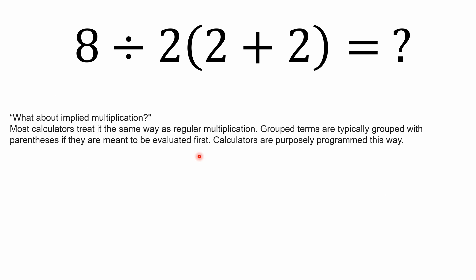And what about implied multiplication? What about implicit multiplication? Most calculators treat it the same way as regular multiplication. Most scientific calculators that are out there, any kind of group terms that you have, they're typically grouped with parentheses. Some scientific calculators actually will, if I Google, if I type a problem into Google that doesn't have parentheses, often Google automatically puts them in there, which is redundant around multiplication, but they'll do that. But again, group terms are typically grouped with parentheses if they're meant to be evaluated first.